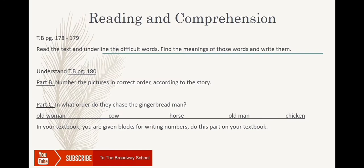You have done the reading with me. Now I would like you to read the story one more time — underline the difficult words and find their meanings. Open textbook page 180. In Part B, number the pictures in the correct order according to the story.